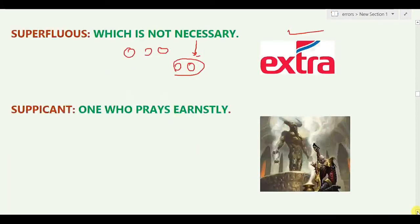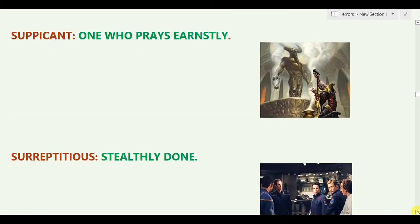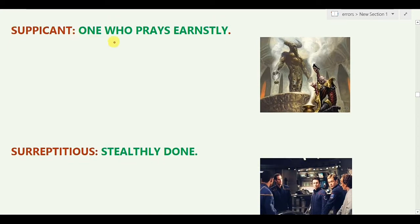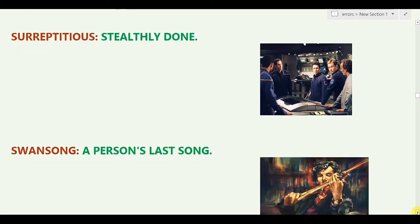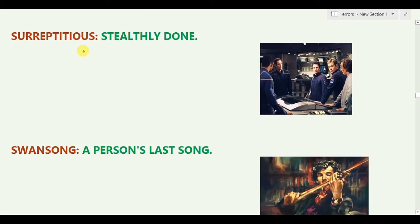The next word is 'Supplicant,' which means one who prays earnestly — with full devotion, with the whole heart. You can see someone practicing here — he is a supplicant because he is praying earnestly. The following word is 'Surreptitious,' which means covert, mysterious, secret. All of these — covert, mysteries, secrets, stealthily — are synonyms. Surreptitious means doing something secretly.